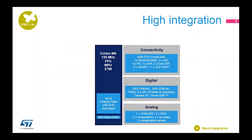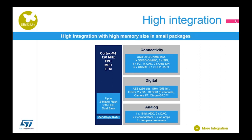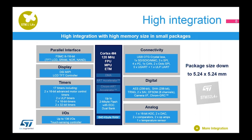The third message is regarding integration. The STM32L4 Plus block diagram shows many embedded peripherals: communication peripherals including USB, UART, SPI, CAN, and more. Notably, it offers up to 2 MB of flash and 640 KB of SRAM, with packages as small as 5 by 5 millimeters.